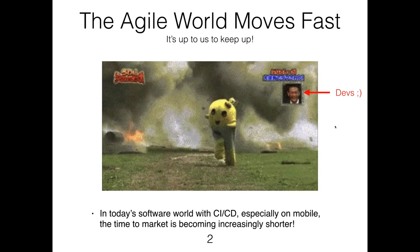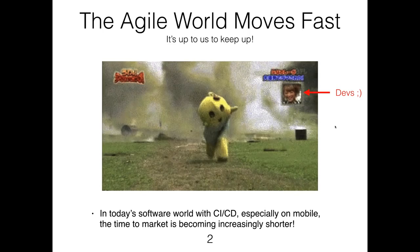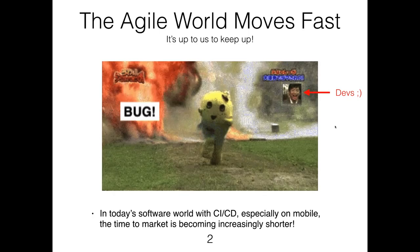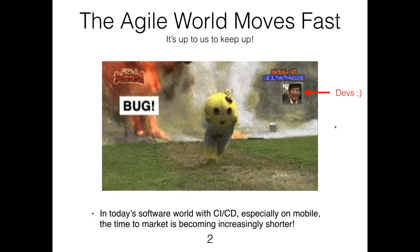The Agile world moves fast and it's up to us to keep up, especially in mobile with CI and CD continuous deployment. The time to market is becoming increasingly shorter. When I first started my career, it was normal to have two to three month iterations. Now we're lucky to have two to three or even four day release cycles, or even several within one day. Because of this, companies want to continuously push out new features to keep ahead of competition or release any bug fixes.